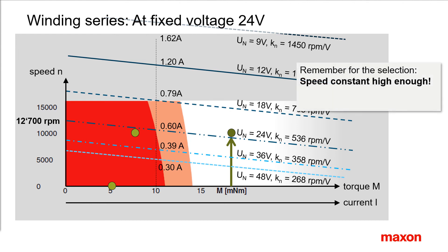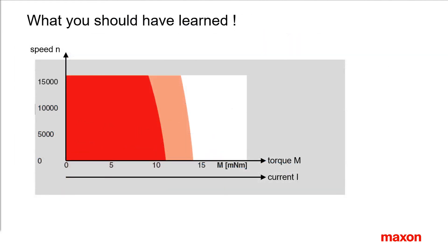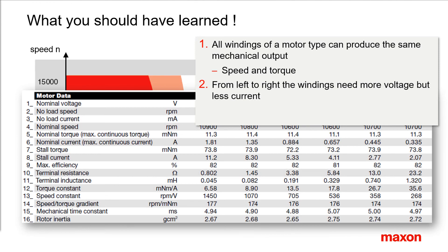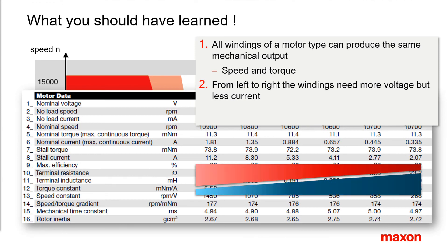The key message is: select a winding with a high speed constant, but don't go too high, in order to keep the required current small. Some key messages to keep about motor windings: all windings of a motor type can produce the same mechanical output — speed and torque. From left to right, the winding needs more voltage but less current. Select a winding that fits best your power supply.